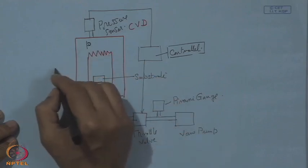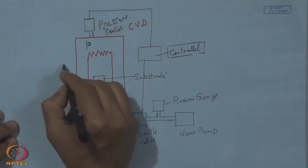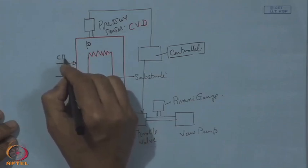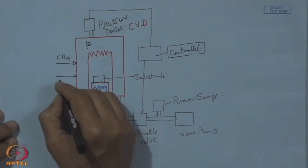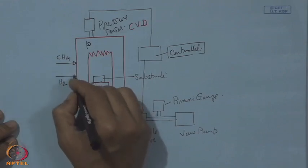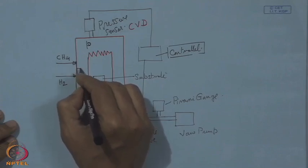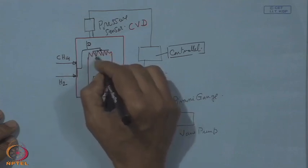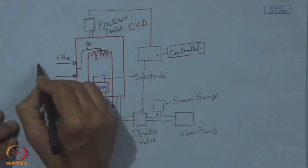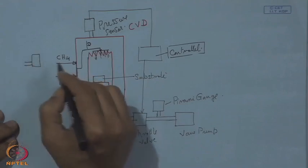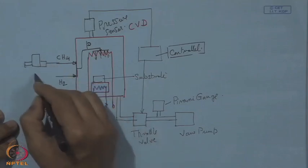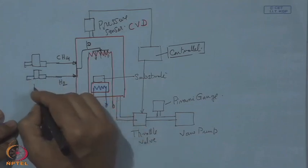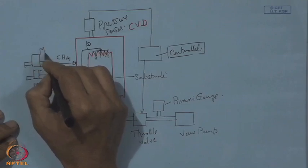On the upstream side, two gases are incoming: CH4 as the source of carbon, and hydrogen. They are mixed before entry and showered over the filament through a shower-type inlet. Mass flow controllers (MFC) — one for hydrogen and one for methane — regulate the gas flow. This is the basic CVD setup, with gas bottles on the upstream side.